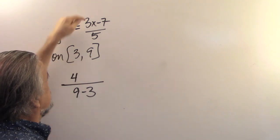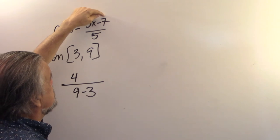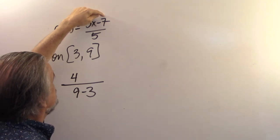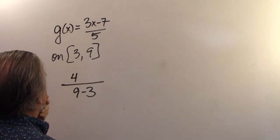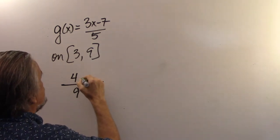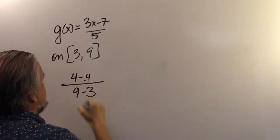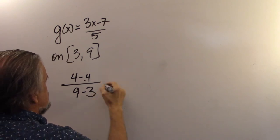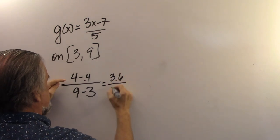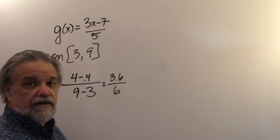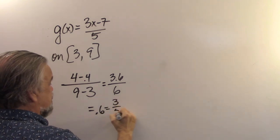And now g(3). g(3) is 3 times 3, 9, minus 7, which is 2, 2 over 5. And did I do that right? I believe I did. So that's going to be minus 2 fifths. So I'll call that minus 0.4. So this turns out to be 3.6 over 6. Oh, I know what that is. That's 0.6, also known as three fifths.